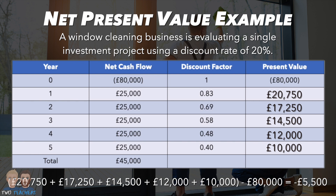With a discount rate of 20%, the net present value of the investment is −£5,500. This negative net present value suggests that the present value of the cash inflows falls short of the initial investment, indicating the project may not be financially viable — in contrast to the nominal net return of £45,000 calculated before taking discount factors or present values into account.